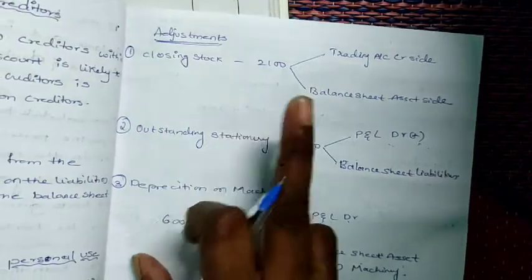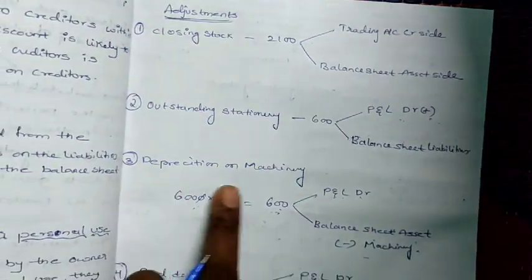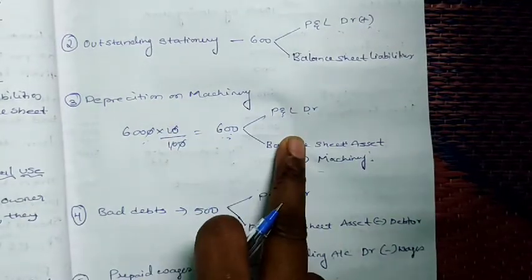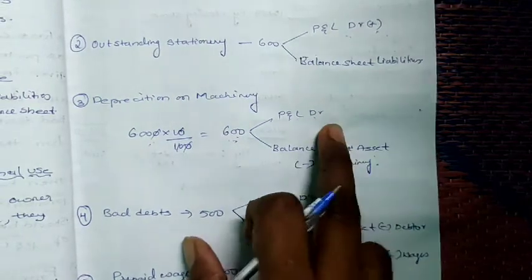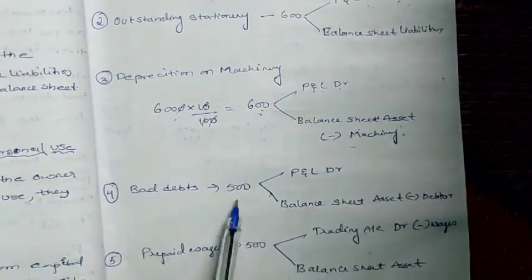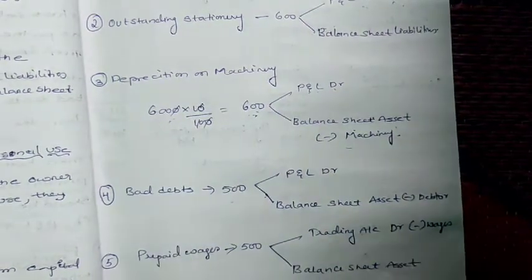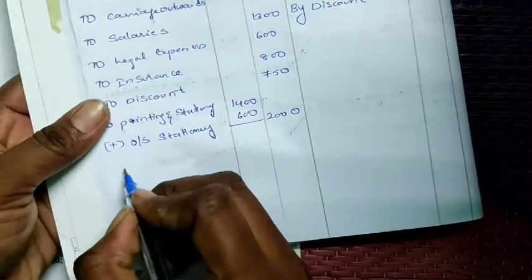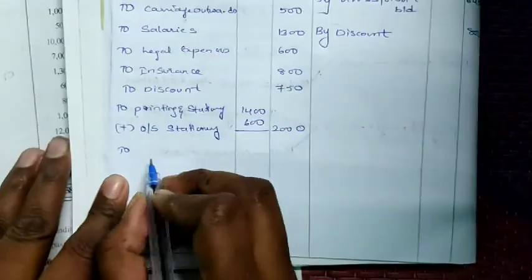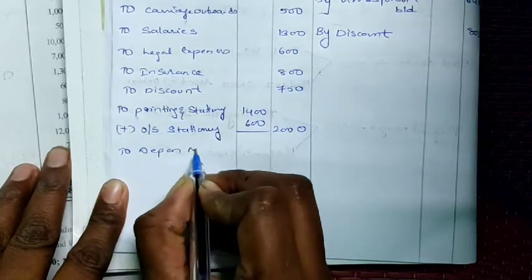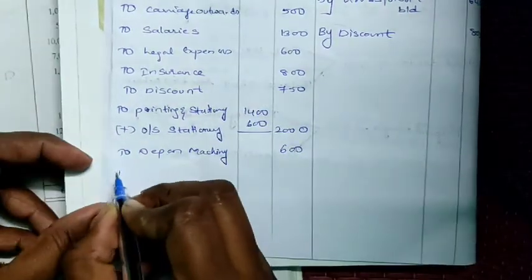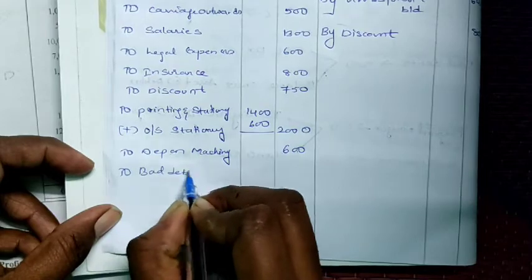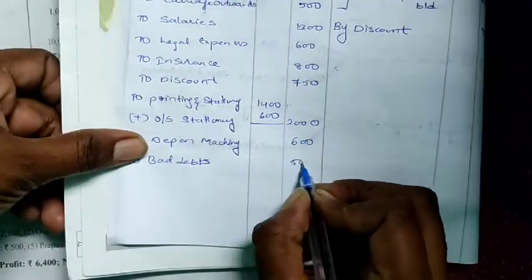From adjustments remaining: depreciation on machinery 600 is taken in P&L account debit side. Bad debts 500 is taken in P&L account debit side. Prepaid wages has already been handled in trading account. Now total the debit and credit sides separately. Debit side total comes to 7,050. Credit side total is 7,200.